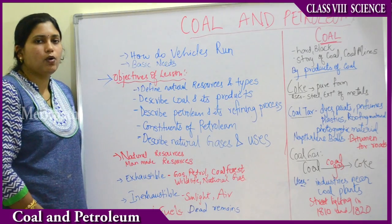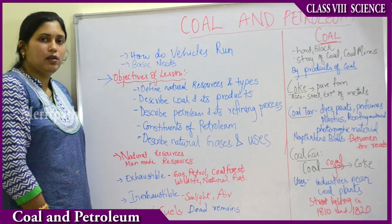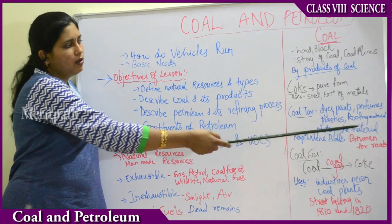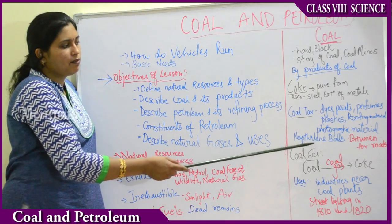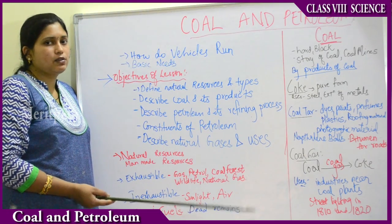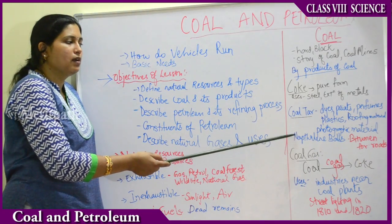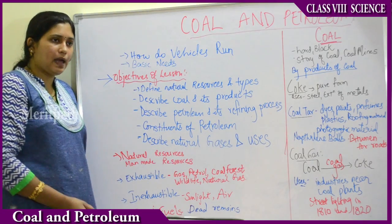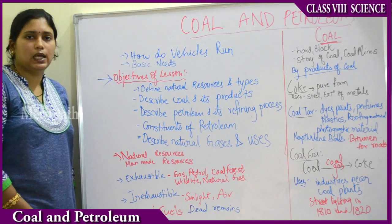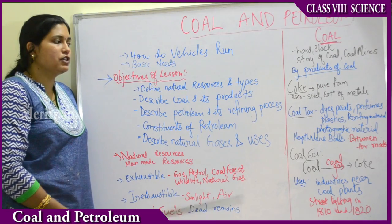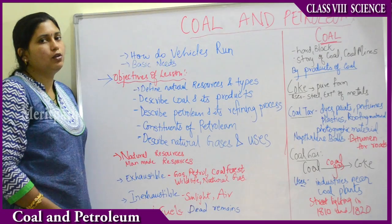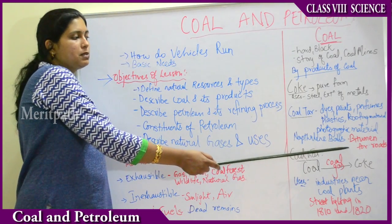Coal tar is a thick blackish liquid with an unpleasant smell. It is used in almost every product in our daily life — dyes, paints, perfumes, plastics, roofing materials, and photographic materials. Interestingly, naphthalene balls, which you put in clothes and bathrooms to repel insects, also come from coal tar. Coal tar is made up of almost 200 substances and was also used in laying roads. However, nowadays bitumen — a product of petroleum, not coal — is used instead of coal tar for laying roads.